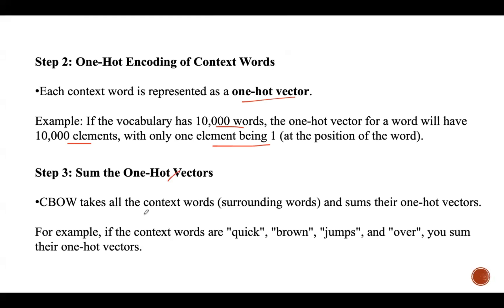Step three is summing the one-hot vectors. CBOW takes all the context words — the surrounding words — and sums their one-hot vectors. This is done because CBOW treats the context words as a bag, ignoring word order. For example, with context words 'quick', 'brown', 'jumps', and 'over', we take their one-hot vectors and sum them, resulting in a single vector that represents the combined information of the context.